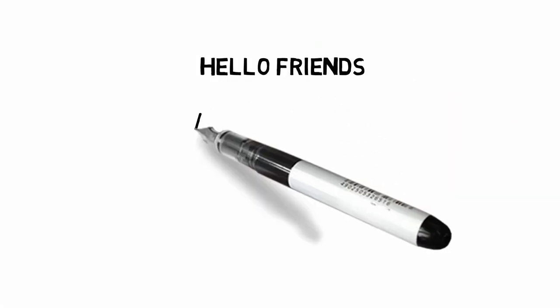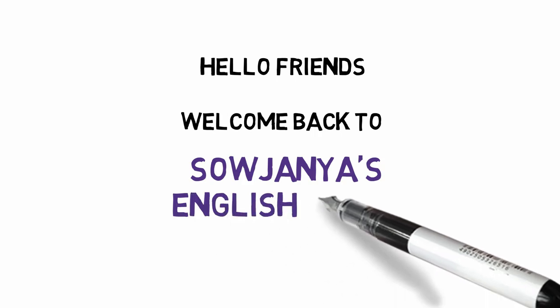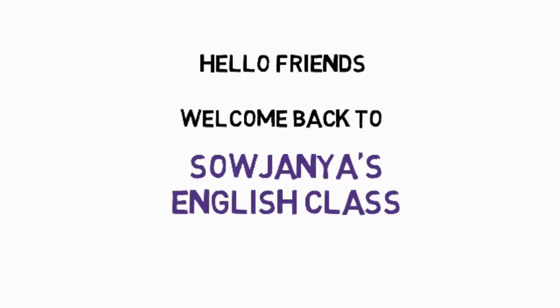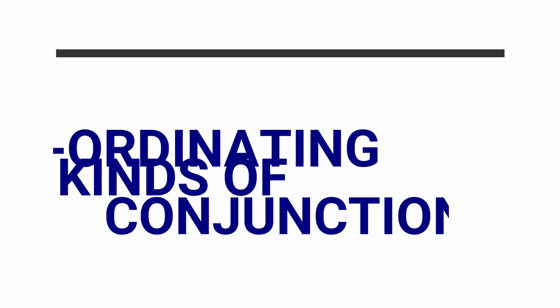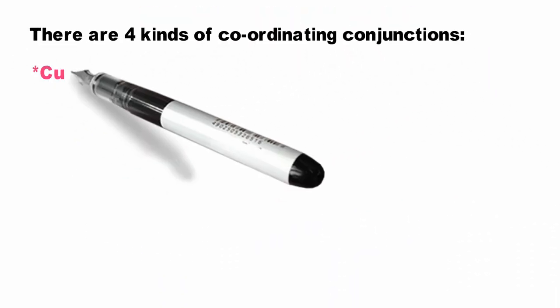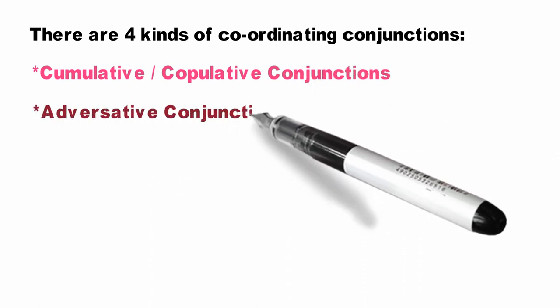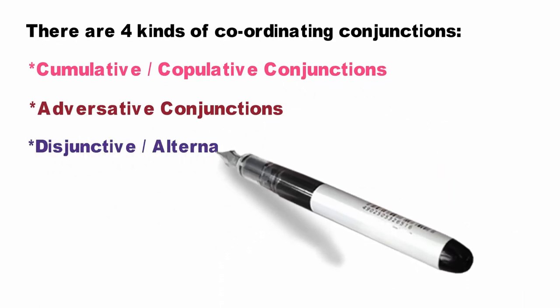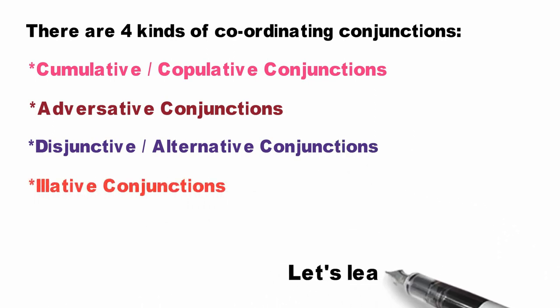Hello friends, welcome back to my channel Savajanya's English class. In today's class we are going to learn about kinds of coordinating conjunctions — a very important topic. There are four kinds: cumulative or copulative, adversative, disjunctive or alternative, and elative. Let's learn about them.